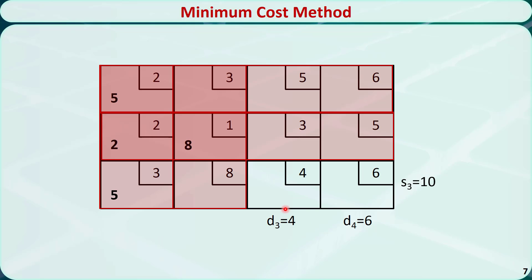Repeat the process. Find the cell with the minimum cost in the remaining tableau, which is this cell. The largest amount we can allocate is 4. We put 4 here and subtract it from S3 and D3. S3 will be 6 and D3 will be 0. This is the new tableau. Since D3 is equal to 0, we will cross out this column and remove D3.